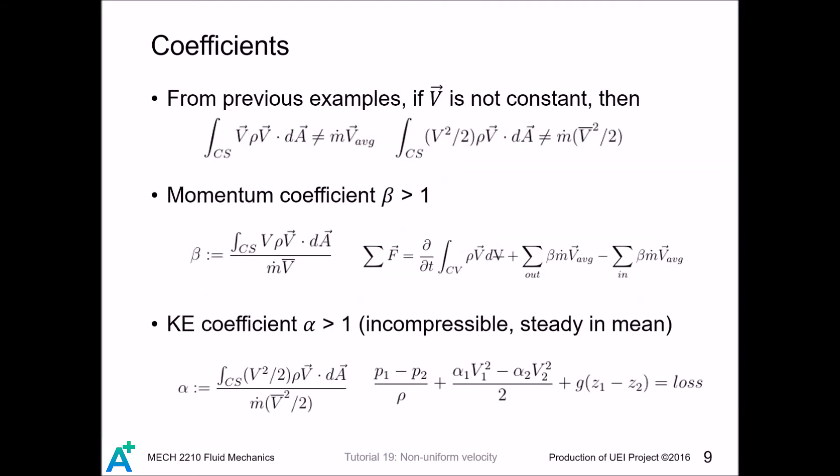From these two examples, we see that we cannot perform analysis as if the flow is uniform. We must perform integration for non-uniform velocity profile. To simplify the analysis, people define two correction coefficients, one for linear momentum equation, and one for the energy equation. With the two coefficients, we can use the energy equation and the linear momentum equation as if the flow is uniform. The only difference is to add the coefficients here.